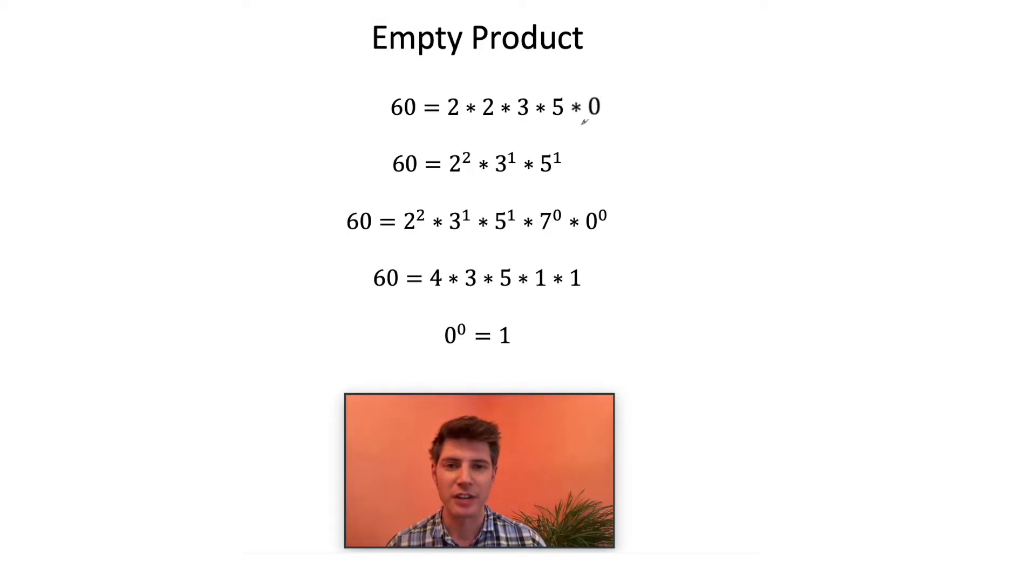If there's one zero up here, that would change the product. But since there's no zeros up here, we multiply by one because we don't want to change the whole answer because there's nothing there to change the answer. So the conclusion with this logic is that zero to the zero equals one, just like seven to the zero equals one.